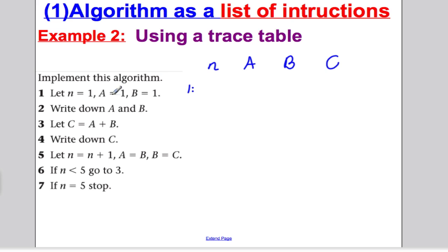So the first thing we're going to do, we're going to write down the key things we need to know in this algorithm: N, A, B, and C. Step one, you write N is one, A is one, and B is one. Step two, we're going to write down A and B, so I'm going to write a write column. A and B are one and one. Step three, let C equals A plus B. So C must be two. Write down C for step four. So we would just write down two.